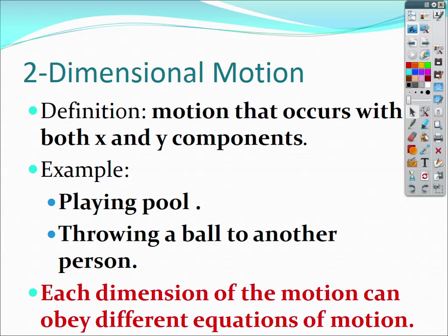You can see the examples we have here. We will more look at the idea of just throwing a ball to another person, shooting a cannon at an angle, throwing a water balloon down from a tall building, and so forth. The biggest thing to get is the words in red at the bottom: each dimension of motion will obey different equations of motion. The numbers we put into them will be different because we have to look at this in terms of X and Y. We just need to simplify it down and ask: what's happening in the X direction, what's happening in the Y direction?